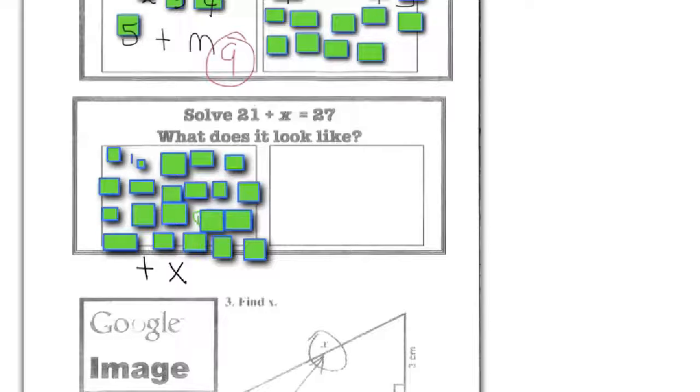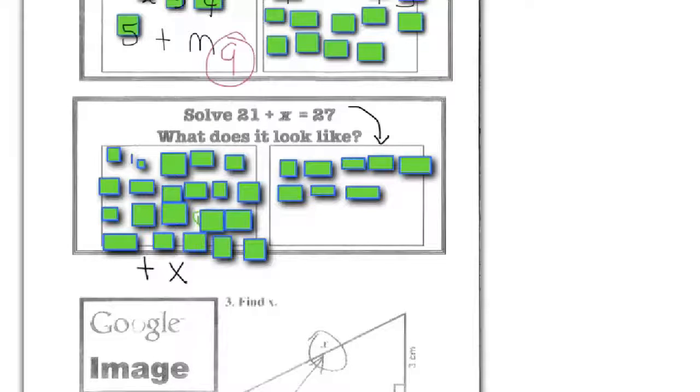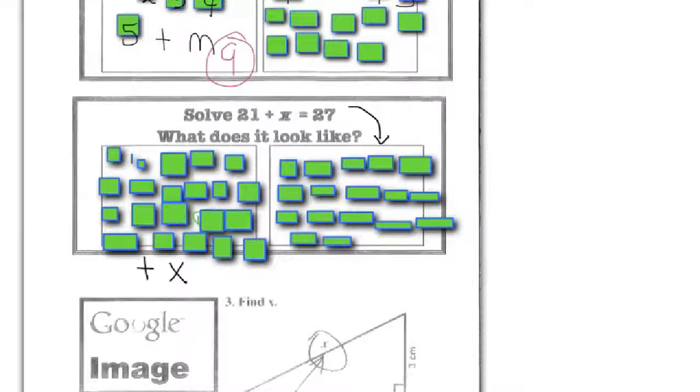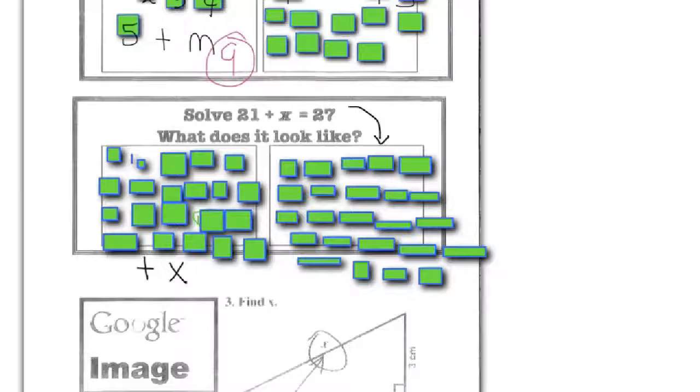It must equal 27 on the other side. So let's go ahead and put 27 on the other side. So there's 1, 2, 3, 4, 5, 6, 7, 8, 9, 10, 11, 12, 13, 14, 15, 16, 17, 18, 19, 20, 21, 22, 23, 24, 25, 26, and 27. That's what it would look like.